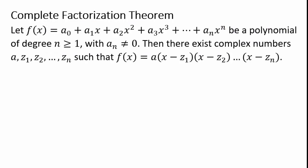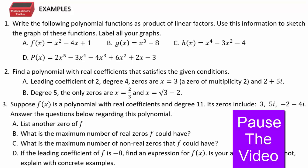A consequence is the complete factorization theorem: any polynomial can be written as the leading coefficient times linear factors, where each factor corresponds to a complex root. So f of x equals a times x minus z1 times x minus z2, all the way to x minus z sub n. Some roots may repeat, giving multiplicity greater than one. Pause the video here, try these examples using everything we've studied.